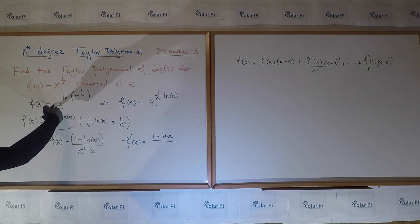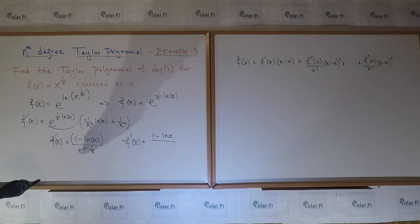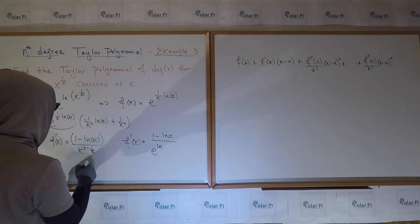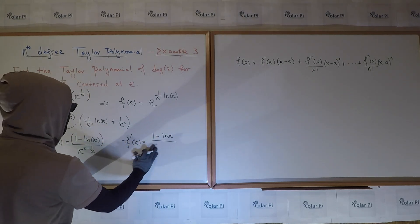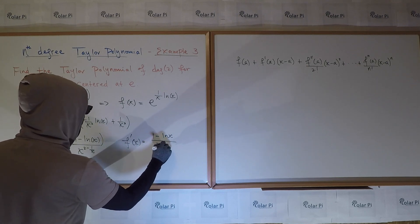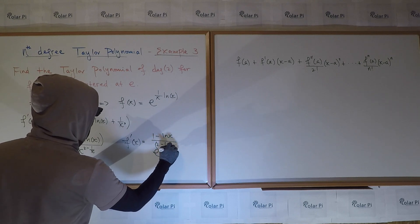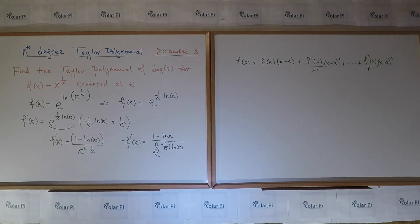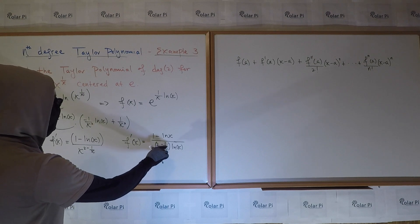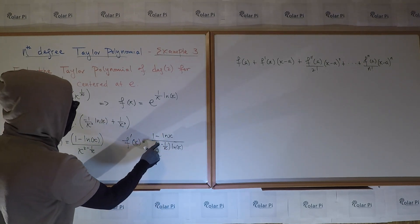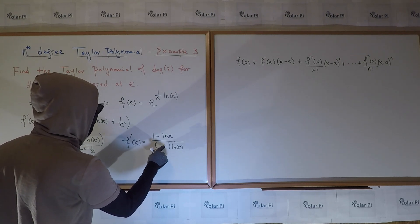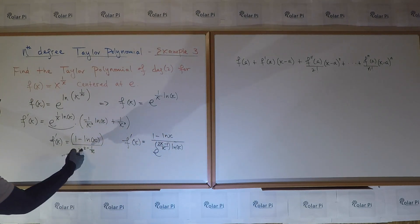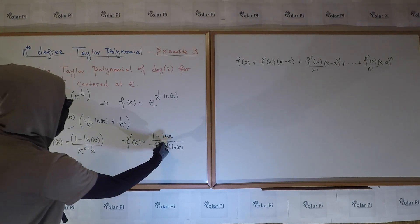...using the same trick of exploiting the inverse relationship between e and ln, we can write the denominator as e to the ln of x to this power, which is going to turn out to be e to the 2 minus 1 over x times ln of x. What I'm claiming is that x to the 2 minus 1 over x is the same as e to the 2 minus 1 over x times ln of x. And this 2 minus 1 over x I could write as 2x minus 1 all over x. I did all of that so that finding the second derivative is easier.